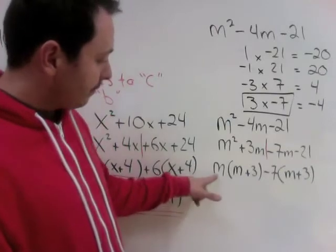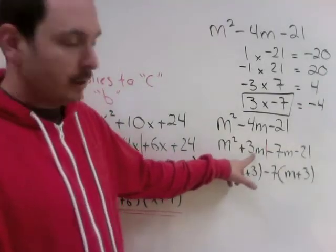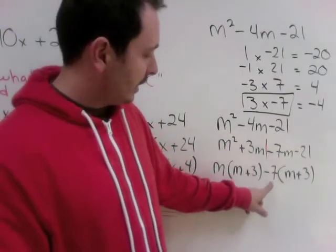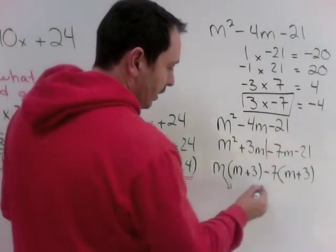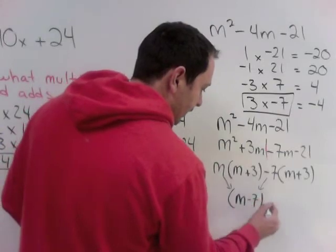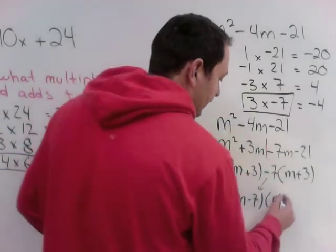And to make sure you've done it correct, can you go back? m times m, m squared. m times 3, 3m. Negative 7 times m is negative 7m. Negative 7 times 3 is negative 21. And my answer is, I take the two parts out in front. m minus 7. And I take the brackets that are being repeated. And I take them once.